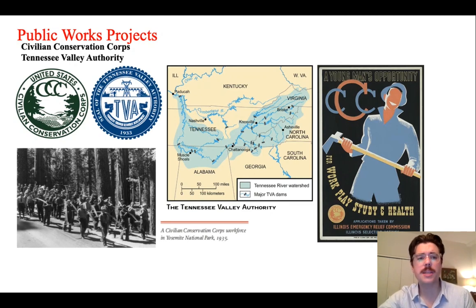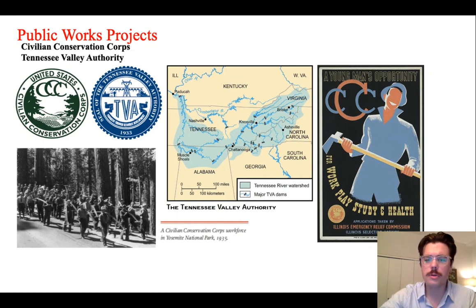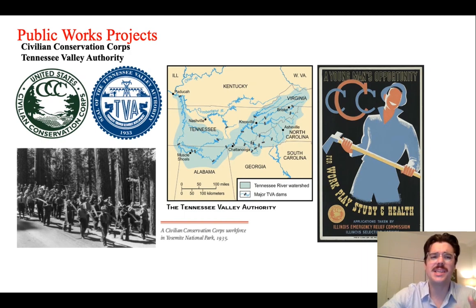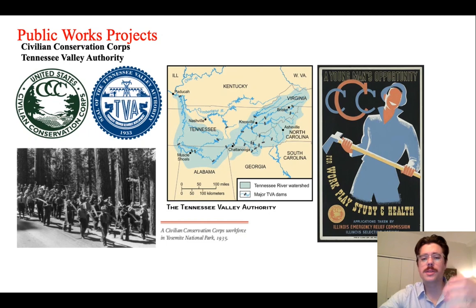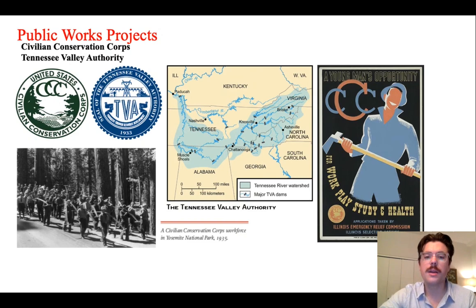This pertains primarily to public works projects. There are two in particular: first, the Civilian Conservation Corps, or the CCC; and second, the Tennessee Valley Authority, or the TVA. Both in their own way transform American democracy through the direct intervention of the federal government. The Tennessee Valley Authority essentially modernizes an area of the United States that was still living in the 19th century. This Tennessee Valley area is marked by the confluence of rivers throughout the region.